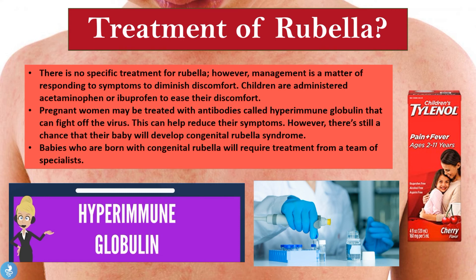Finally, let's talk about the treatment of rubella. There is no specific treatment; management involves responding to symptoms to diminish discomfort. Children are administered acetaminophen or ibuprofen to ease their discomfort. Pregnant women may be treated with antibodies called hyperimmune globulins that can fight off the virus and help reduce their symptoms; however, there is still a chance their baby will develop congenital rubella syndrome. Babies born with congenital rubella syndrome require treatment from a team of specialists — including a pediatric ophthalmologist for eye care, a pediatric gastroenterologist for GI abnormalities, and a pediatric cardiologist for heart defects.